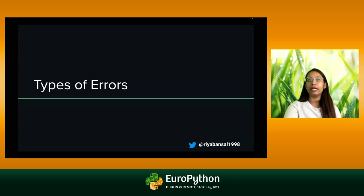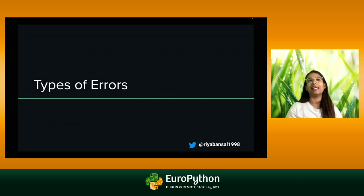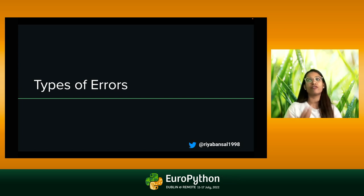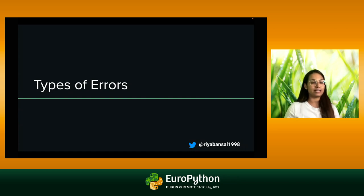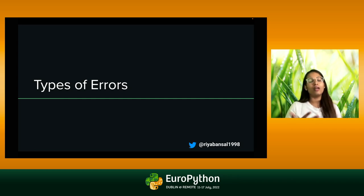We'll go a little bit deeper into what exactly error handling is, what are errors, and the different situations we should keep in mind. A Python program basically terminates as soon as it encounters an unhandled error. These errors can broadly be classified into two classes: first, syntax errors, and second, logical errors — which we call exceptions — and that is what this talk is about today.